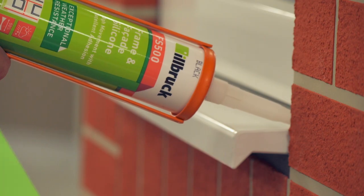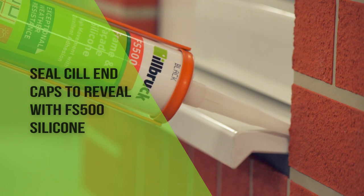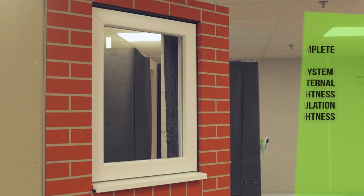Seal the gap between sill and reveal with Ilbrook FS500 frame and facade silicon. The I3 installation is now complete and the window sealed on three levels with the BBA accredited Ilbrook system.